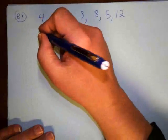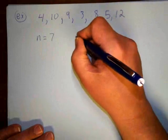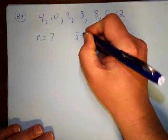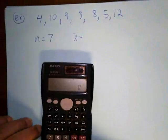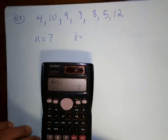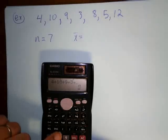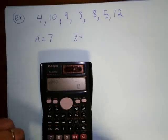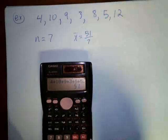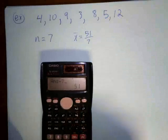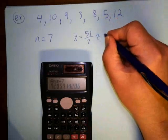Okay, so let's go ahead and give this a try here. My n here is equal to 7, and then my mean, I have to add all these up. Let's see, 4 plus 10 plus 9 plus 3 plus 8 plus 5 plus 12 looks like I get 51 divided by 7, and that looks like I get, it's going to round to 7.3. So my mean is 7.3.